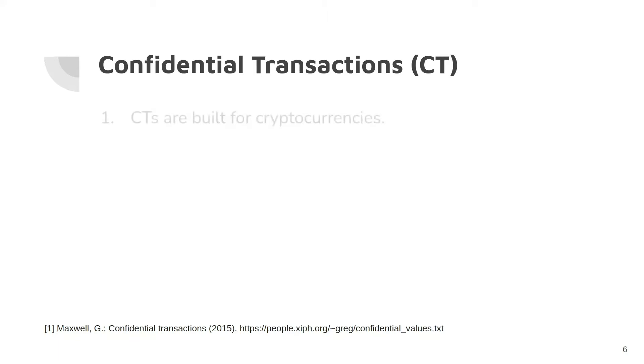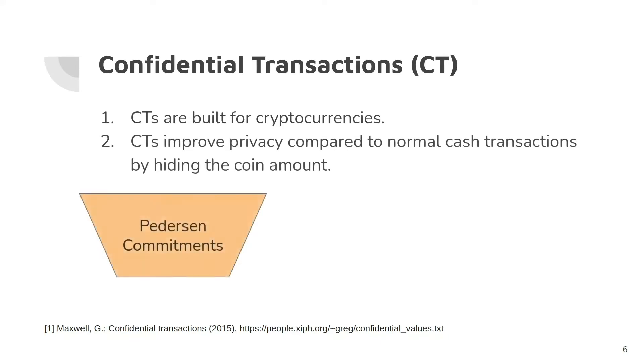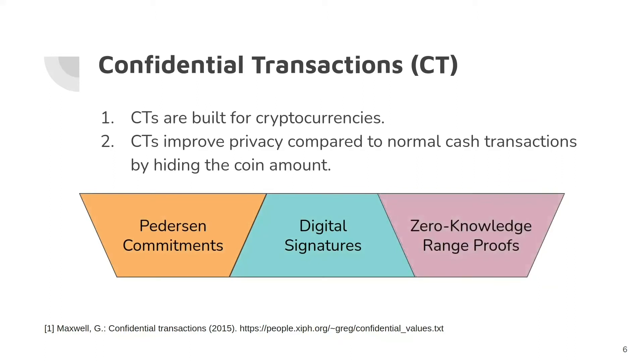The aim of confidential transactions is to hide the coin amount but make sure that no one can steal or illegally generate coins. To build a confidential transaction protocol, we need Pedersen commitments, digital signatures, and zero-knowledge range proofs. Before explaining the protocol, I am going to briefly explain its building blocks.